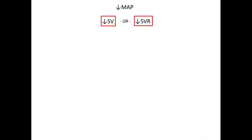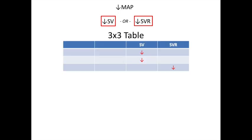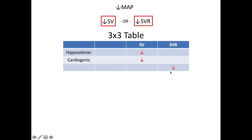If you know that a low MAP is either caused by a low stroke volume or a low systemic vascular resistance, then you can make a 3x3 table. This table represents the differential an intensivist might have in their head when asking what kind of shock is this. There are essentially three kinds of shock: two associated with a low stroke volume — cardiogenic and hypovolemic — and one associated with a low systemic vascular resistance, which is by definition distributive shock.